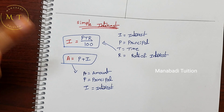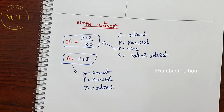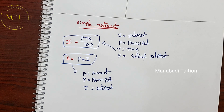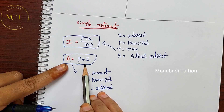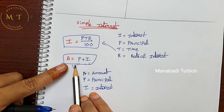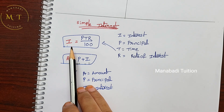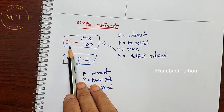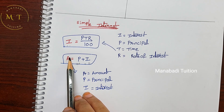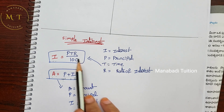A means amount. Amount equals principal plus interest. Suppose you lend your friend 100 rupees and get back 102 rupees — 100 is the principal and 2 is the interest. P means principal.